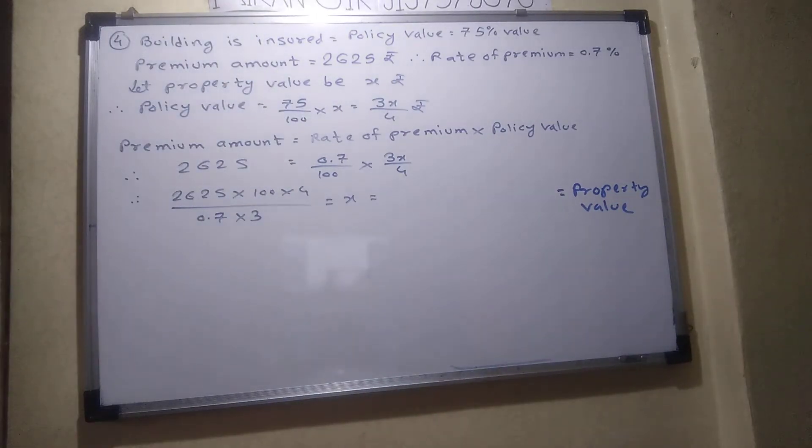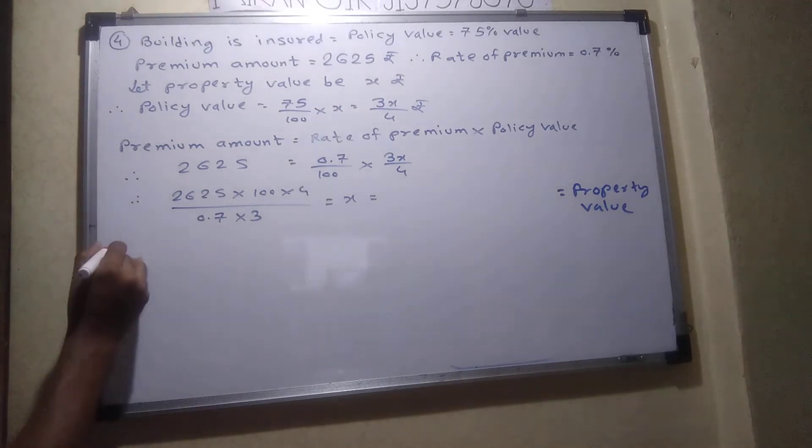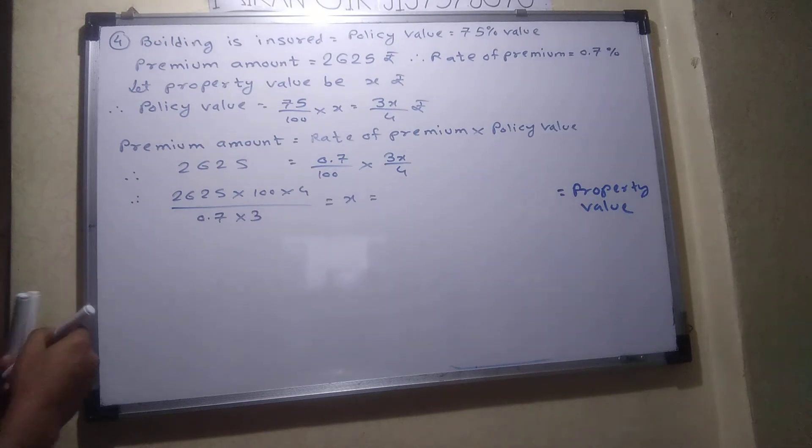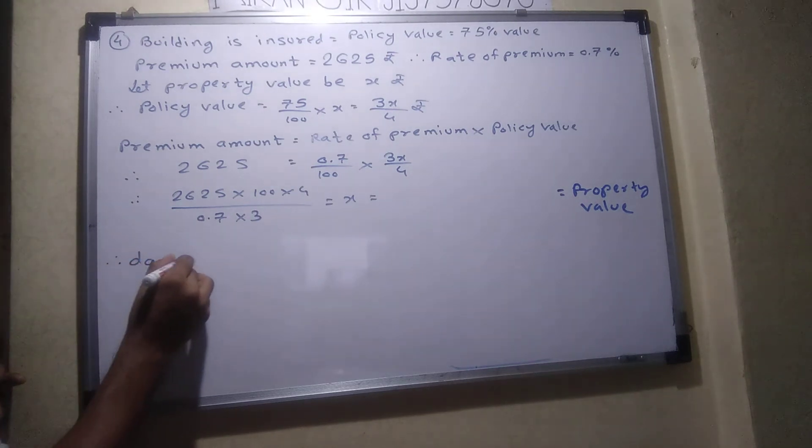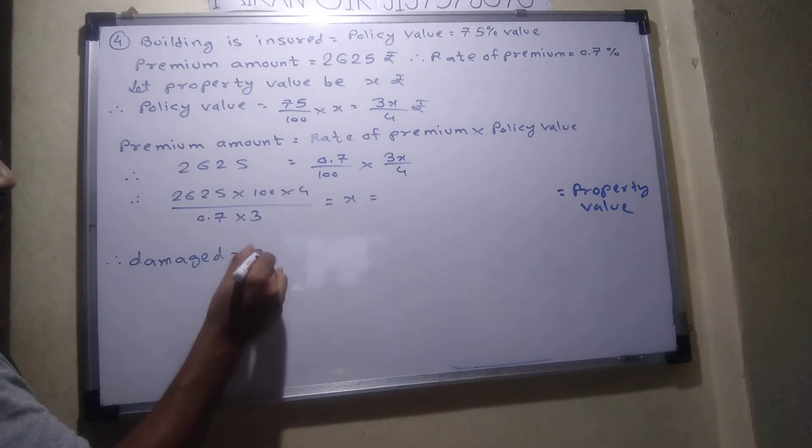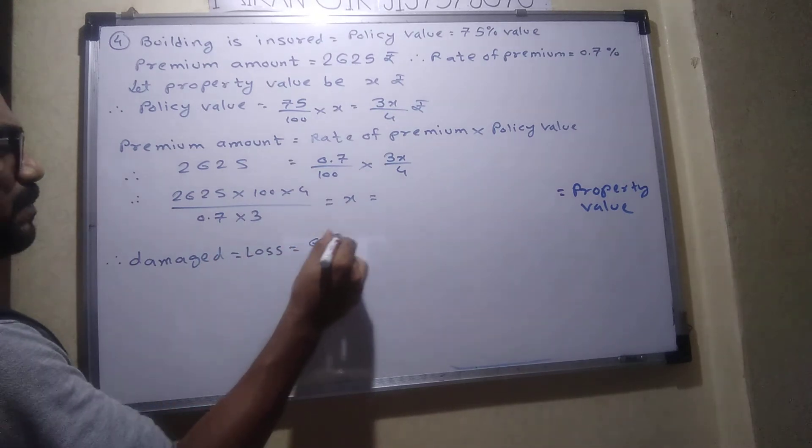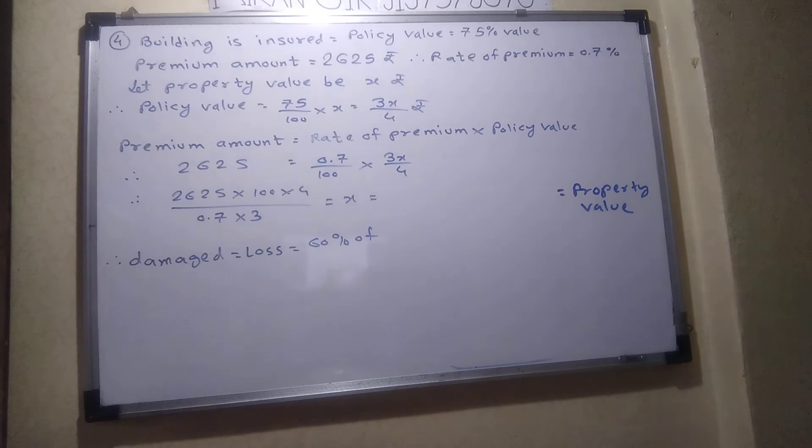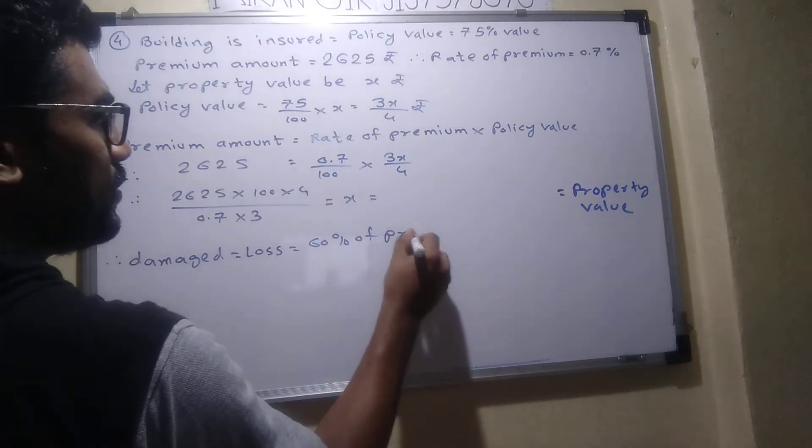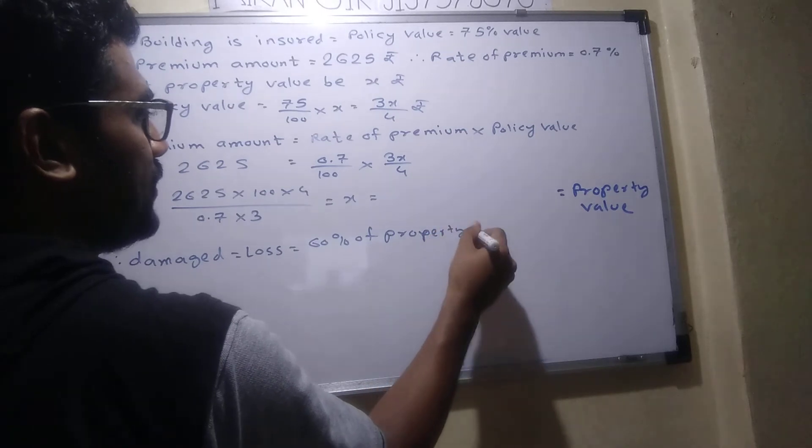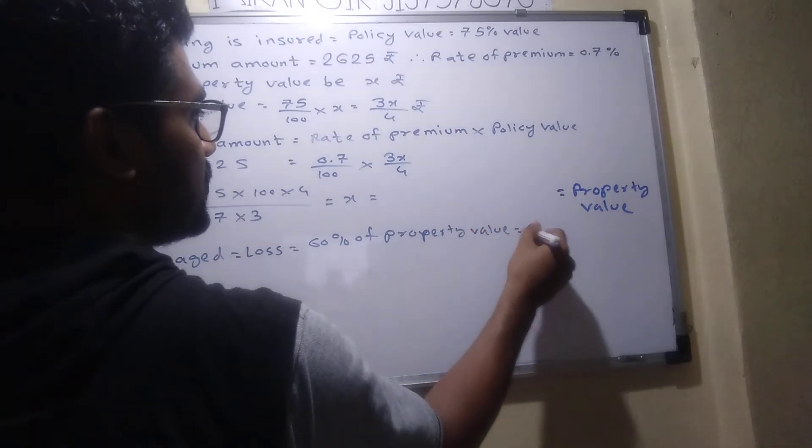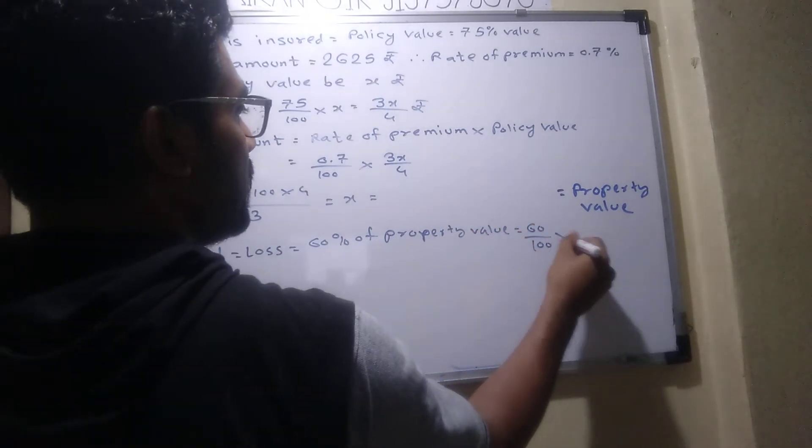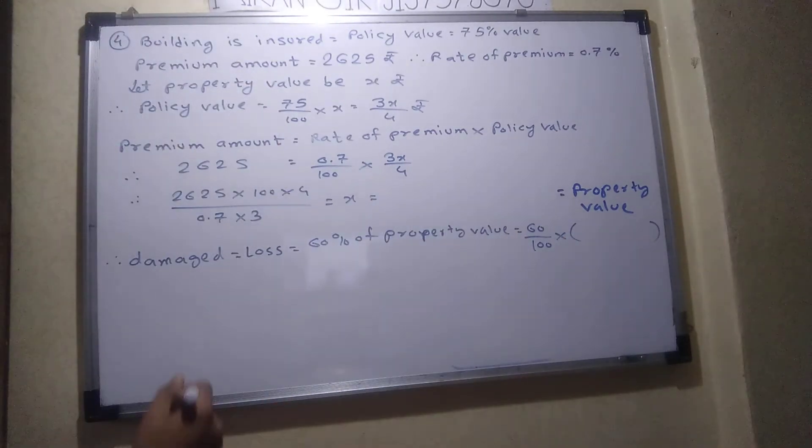So now once you get property value, what is given? How much loss? Loss, what is the rate? Damage. Damage is how much? What is given? Damage over there. 60% of what? 60% of property value. 60% of x. So x we will get here.